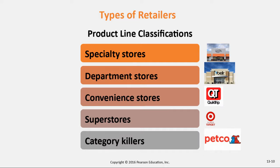Convenience stores — my favorite in the whole country is QuikTrip, based out of Oklahoma. Clean, well-stocked, great coffee. Super stores, like a Super Target, are where you can buy electronics, groceries, clothing, and Halloween costumes. They carry many product lines. They might have a pretty good assortment of vacuums but not as deep a selection of electronics as Best Buy — but they do have electronics.